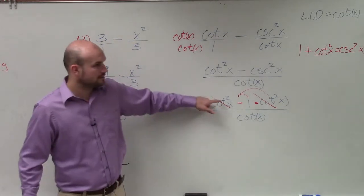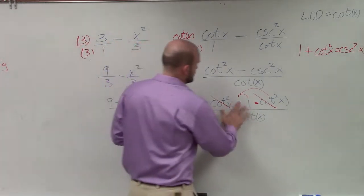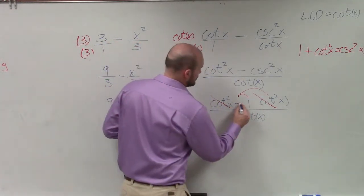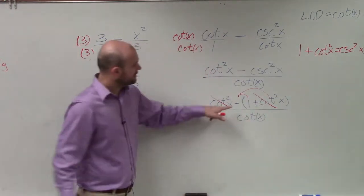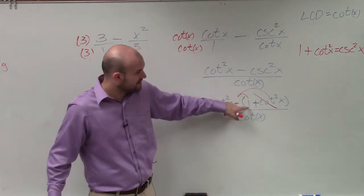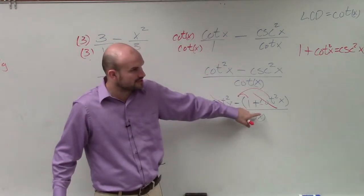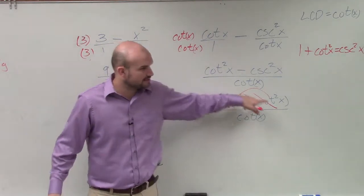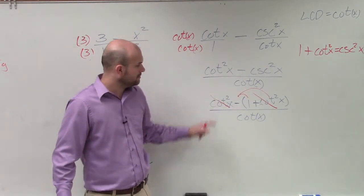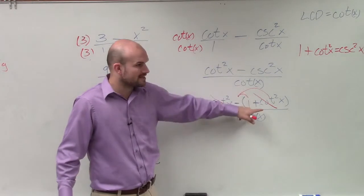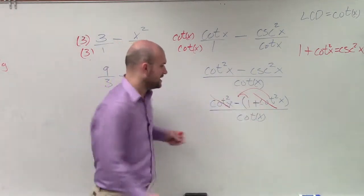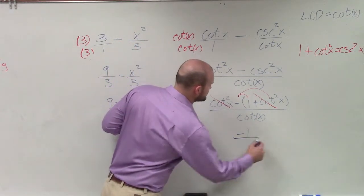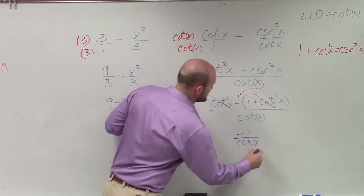I just distributed the minus 1 to the minus cotangent. So then those two are going to subtract to 0. Negative 1 times 1, negative 1 times cotangent squared. So now those delete out or subtract to 1. I'm just left with negative 1 over cotangent of x.